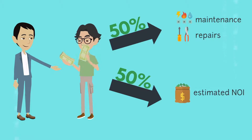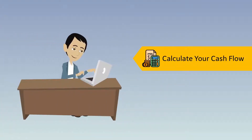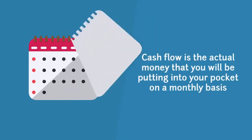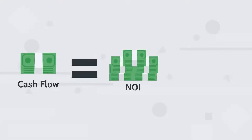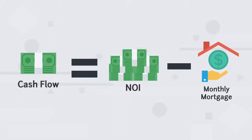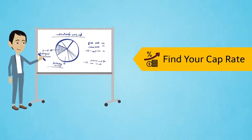Tip number two is to use your estimated NOI to calculate your cash flow and further investigate how worthwhile the potential deal could be. Your cash flow is the actual money that you will be putting into your pocket on a monthly basis. To find this number, simply subtract the property's monthly mortgage from your NOI.